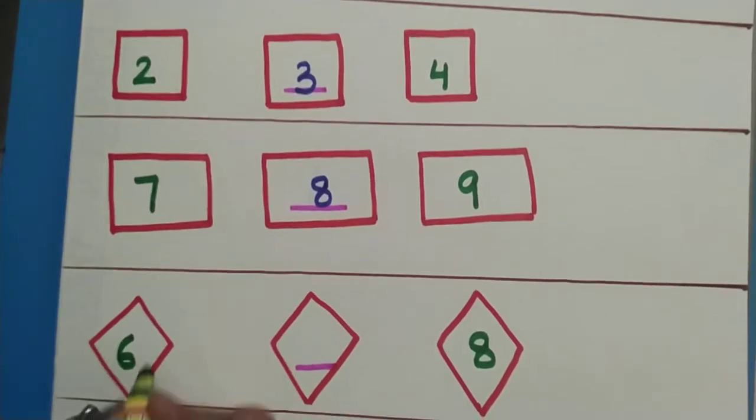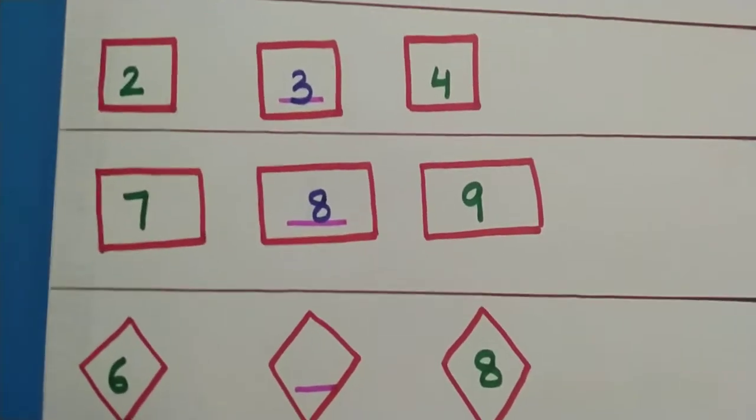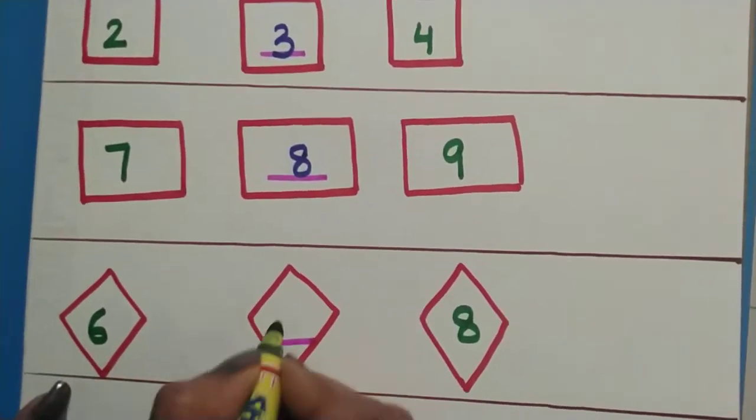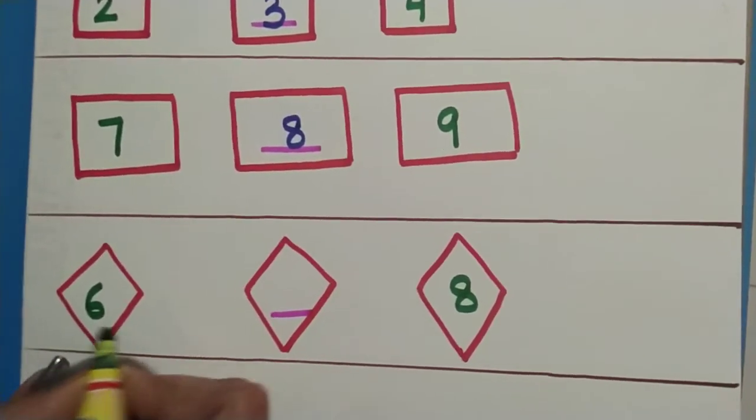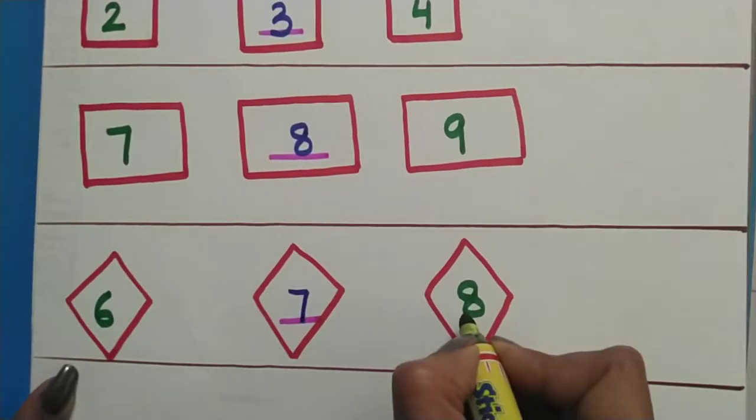Now which shape is this? This is a diamond shape. And which number is here? Six. And no number here. And this is eight. So let's count and write. Six, seven and eight.